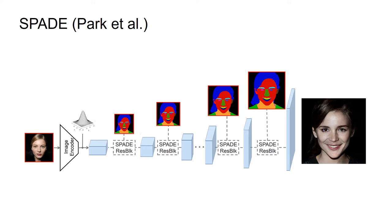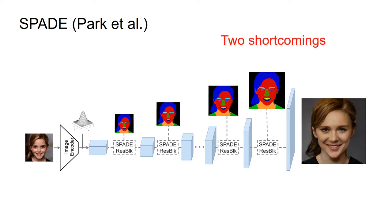However, by analyzing SPADE results, we found two shortcomings that we would like to improve upon. First, SPADE uses only one style code to control the entire style of an image, which is not sufficient for high-quality synthesis or detailed control.